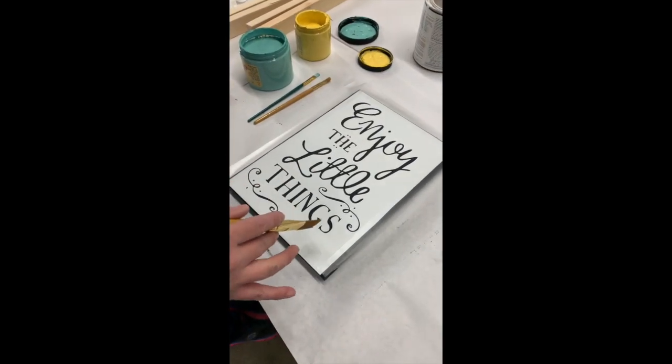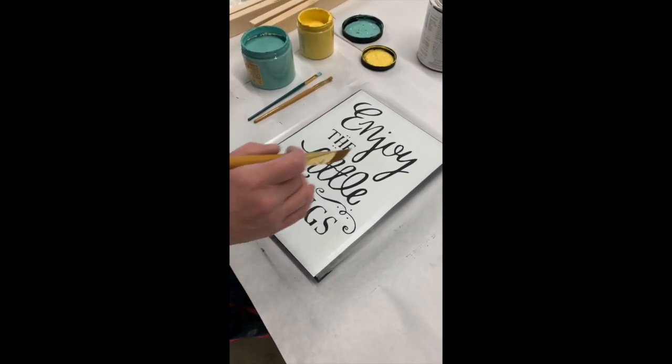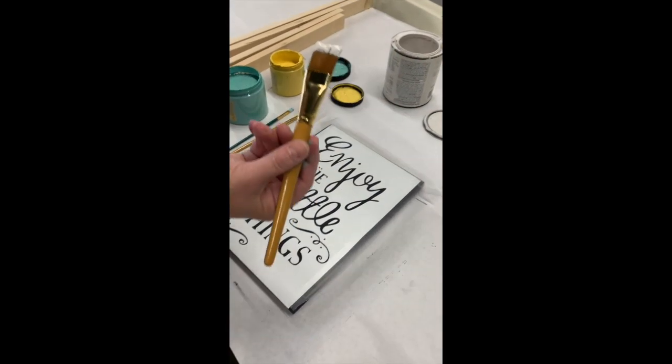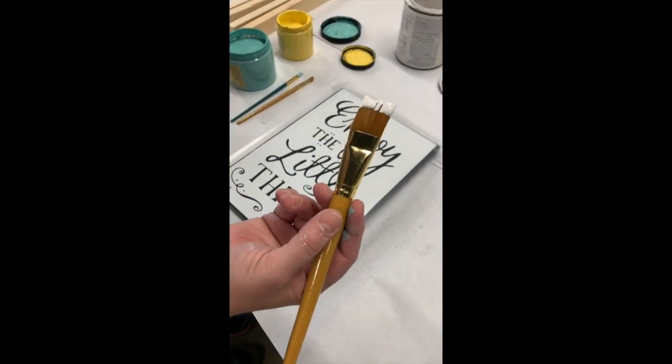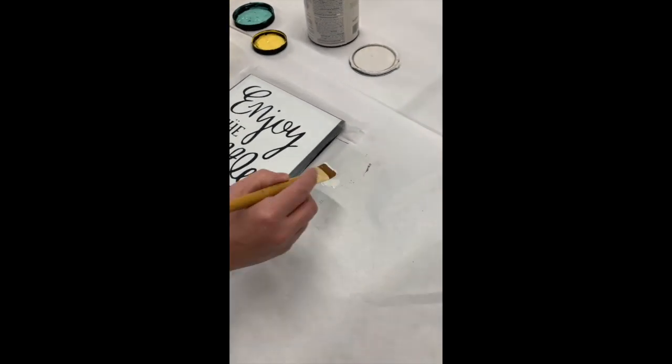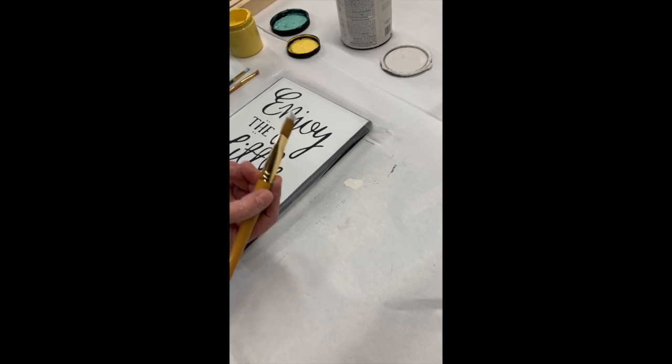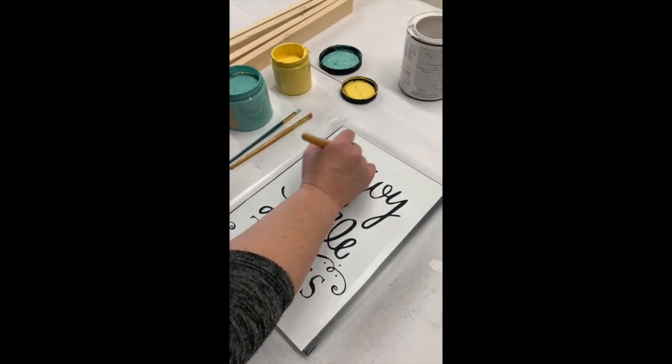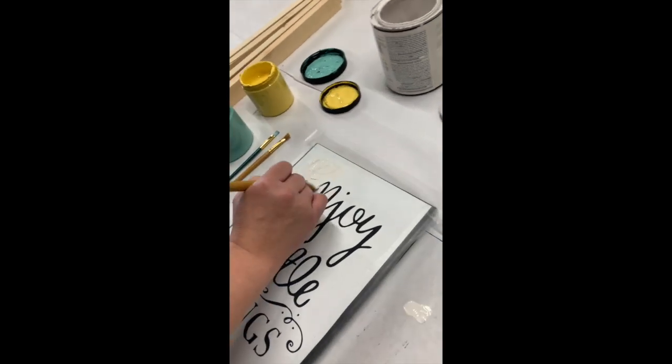Now that we've got our stencil applied, we're going to start painting. I always tell everybody the best thing you can do is use very little paint. So get a little bit of paint on your brush and then unload it a little bit on the paper so that you don't have quite so much paint on your brush at one time. And you want to just lightly paint your design.